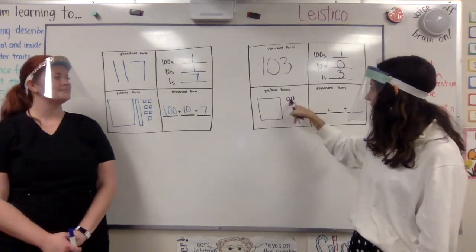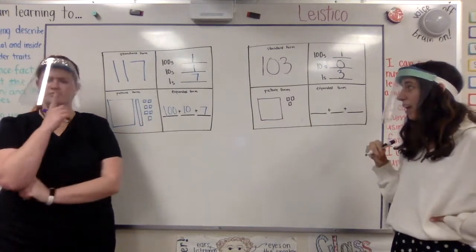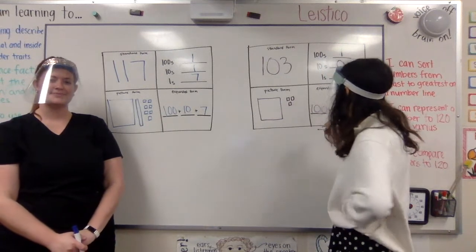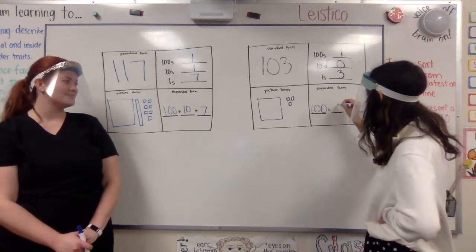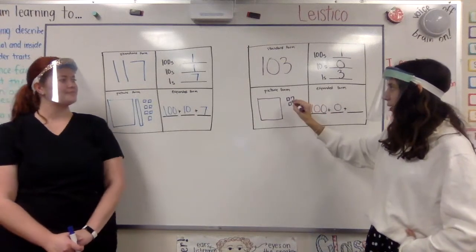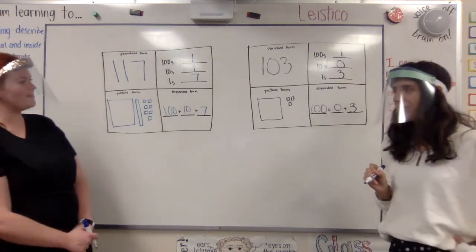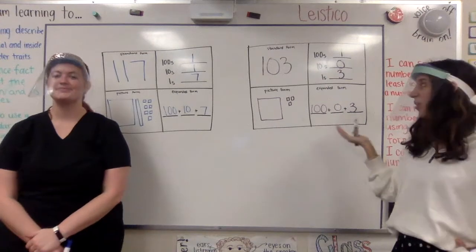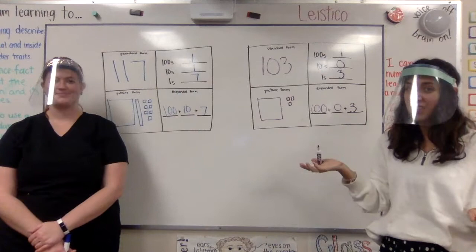So I have 100 and 3 ones. Now for my expanded form, I know that my 100 block is worth 100. And I have 0 tens, so for my tens value it's worth 0 because there's none of them. And I have 3 ones, and so counting by ones I count 1, 2, 3, and they're worth 3. Great job, Ms. Lyme. I like how you remembered to put that 0. That's right. Even though there were no ten blocks, we have to know that we remember the value of them is worth 0. That's right.